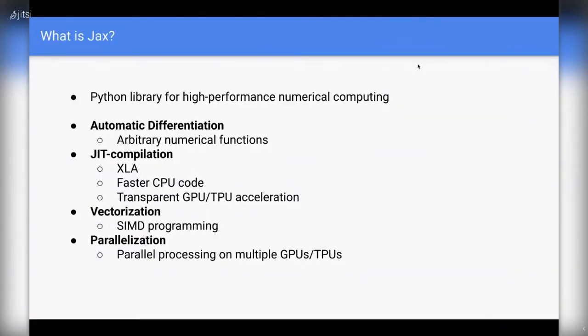JAX is a Python library for high performance numerical computing. You must have heard of libraries such as NumPy or TensorFlow. JAX provides certain functionalities that can be useful if you are doing some sort of statistics or if you want to build neural networks.